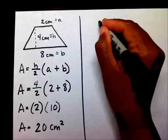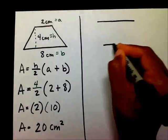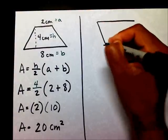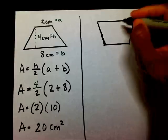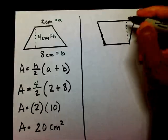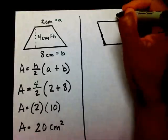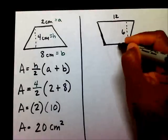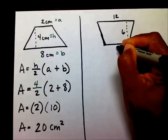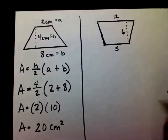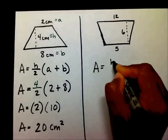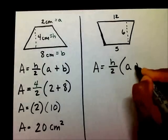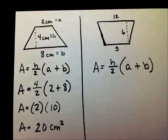Okay. So, we've got another one. I'm going to make this 6, make that 12, and make this 5. So, we're going to write our equation. A equals h divided by 2 times a plus b. Let's label our a, b, and h.